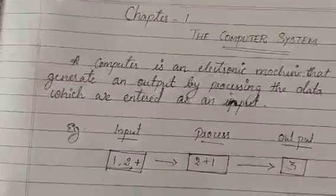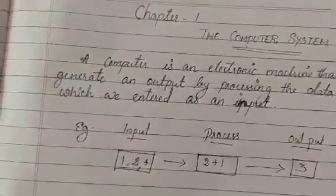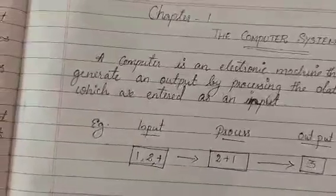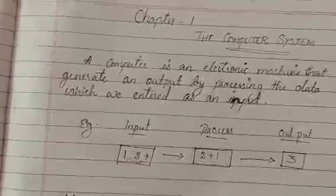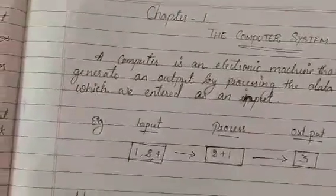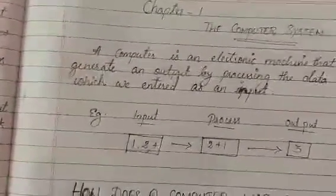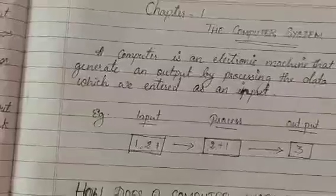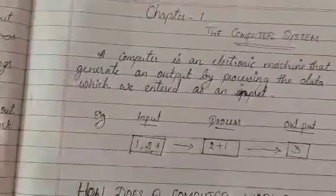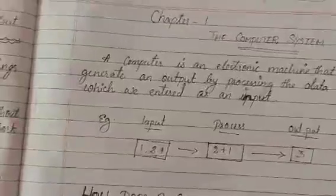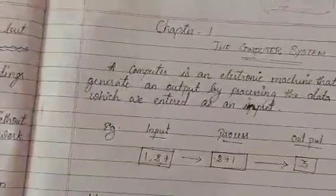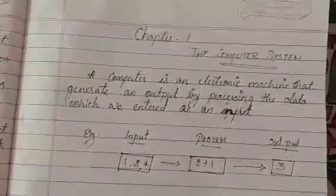See the example. Here the inputs are 1, 2 and plus. These are also called data. Next is process. The computer starts processing the given data as 2 plus 1 and got the result 3. The result 3 is generated as the output.